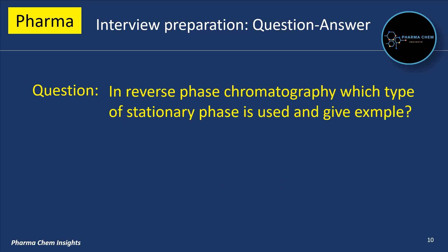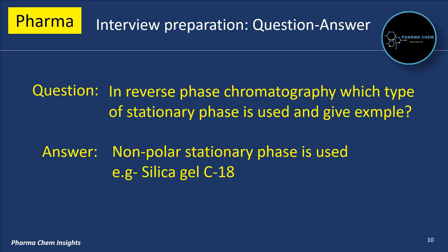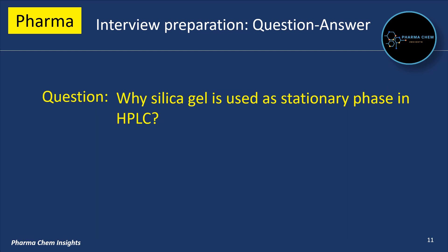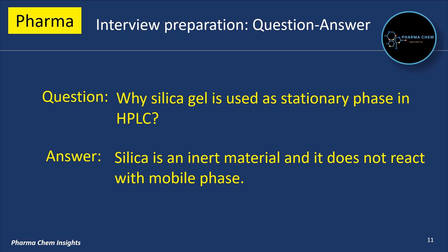Next Question: In reverse phase chromatography, which type of stationary phase is used? A non-polar stationary phase is used, for example silica gel C18. Next Question: Why is silica gel used as stationary phase in HPLC? Silica is an inert material and it does not react with the mobile phase, and that's why it is used as stationary phase in HPLC.